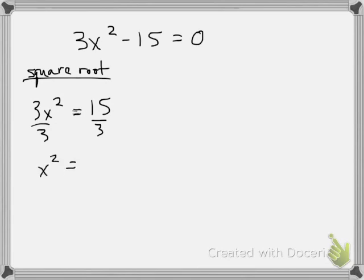Dividing both sides by 3 I get x squared equals 5 and then when I actually want to solve for the x I'm going to square root both sides.